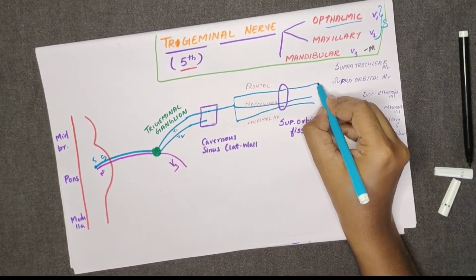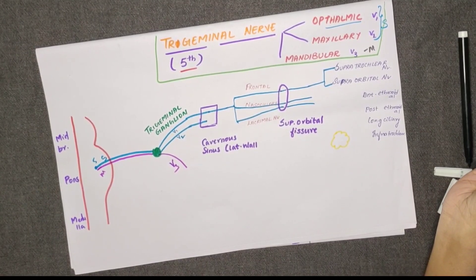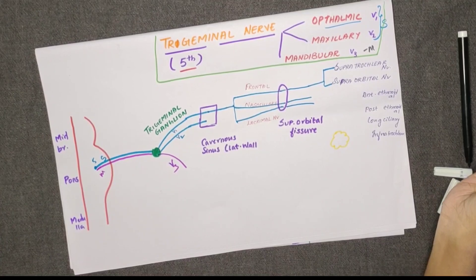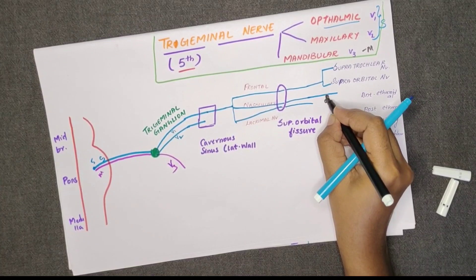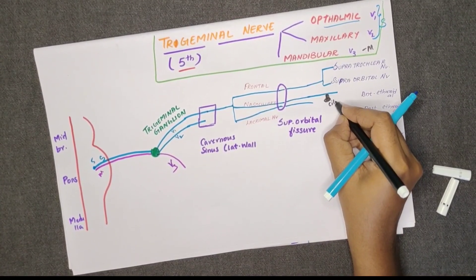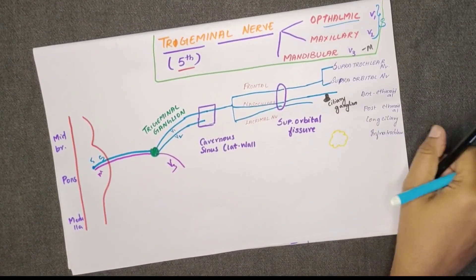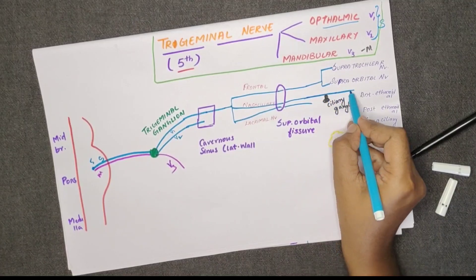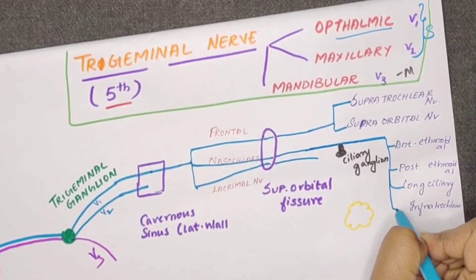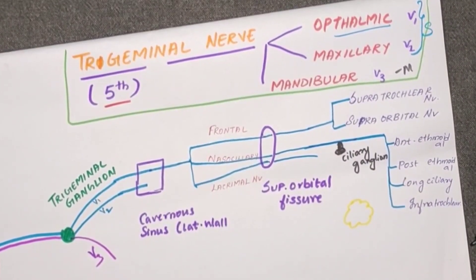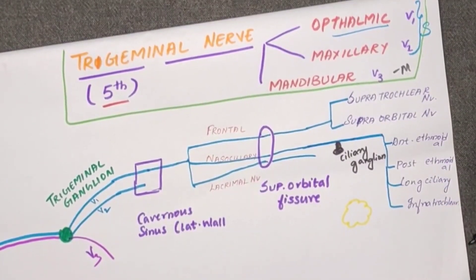In the frontal nerve, there are two main branches: the supratrochlear nerve and the supraorbital nerve. The nasociliary nerve gives four important branches: the first is the anterior ethmoidal, the second is the posterior ethmoidal, the third is the long ciliary nerve, and the fourth is the infratrochlear nerve.